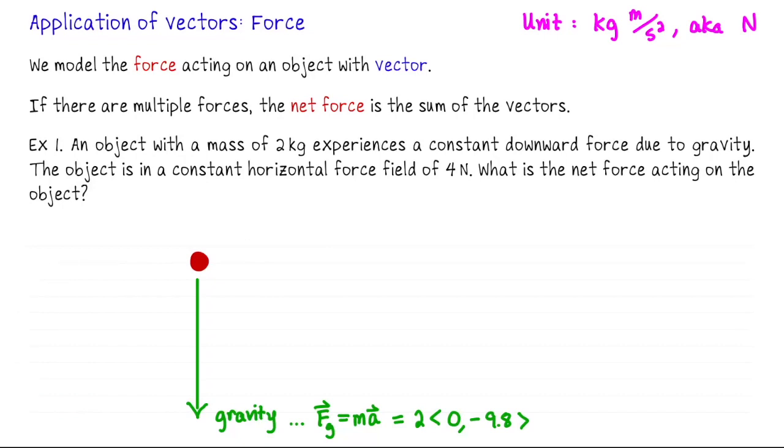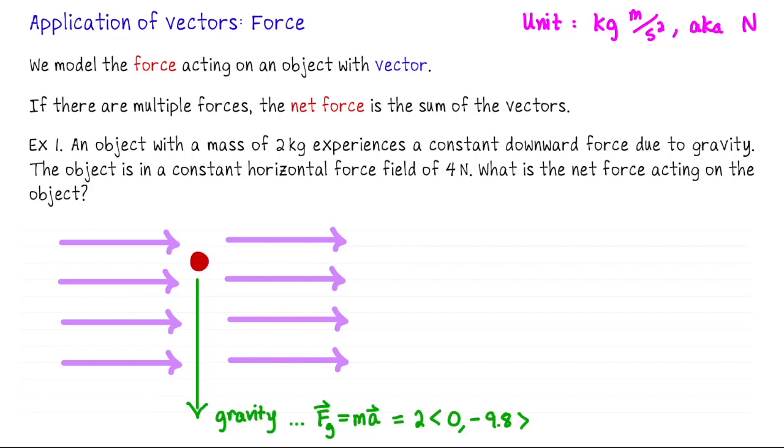The object is in a constant horizontal force field, or perhaps it's just wind or something like that. And this force has a magnitude of 4 newtons. The way I've sketched this, this force is just pointing to the right. The fact that its magnitude is 4 newtons tells us that this force should be modeled as 4, 0.